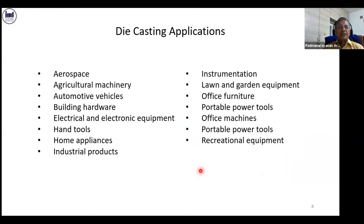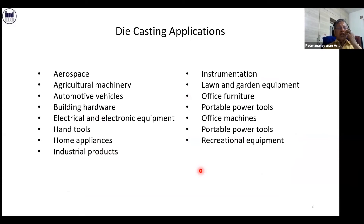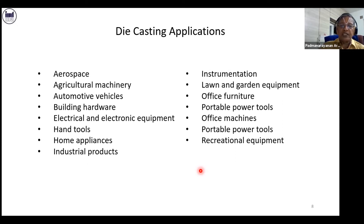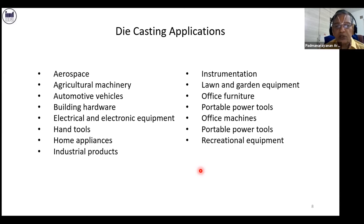The application of die casting is wide: aerospace, agriculture, automotive, building hardware, electrical and electronic equipment, hand tools, home appliances, industrial products, instrumentation, lawn and garden equipment, office furniture, portable power tools, office machines, and recreational equipment. Nowadays it is also increasingly found in electric vehicles, which is going to be the future.